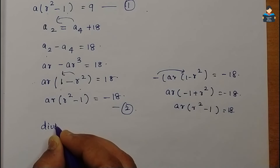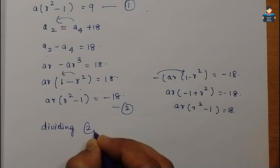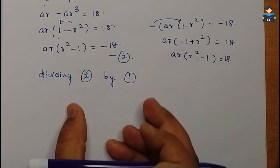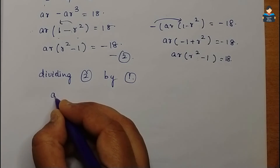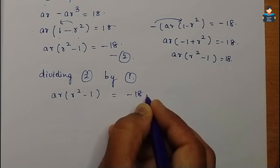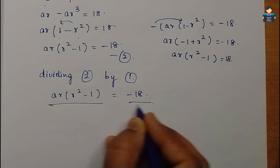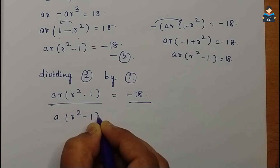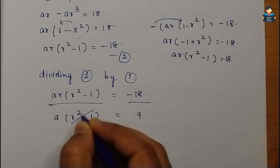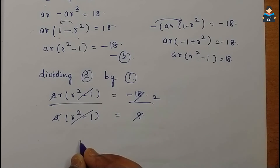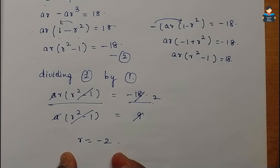Dividing equation 2 by equation 1: ar(r² - 1) / [a(r² - 1)] = -18/9. Cancelling a(r² - 1) from both sides gives r = -2.